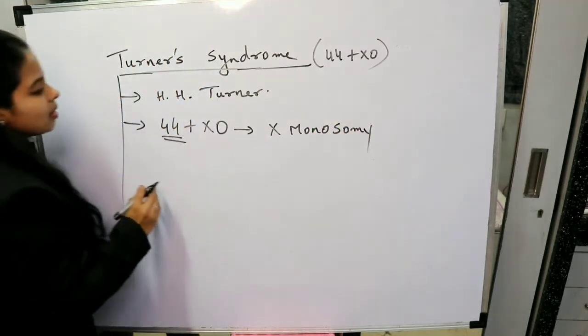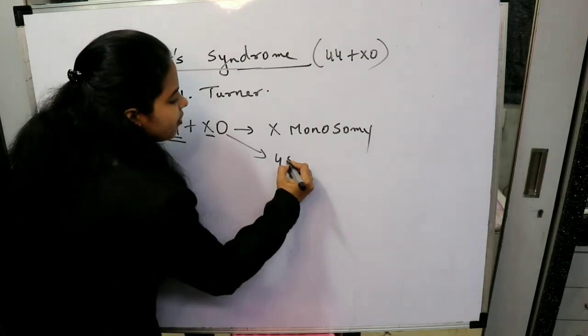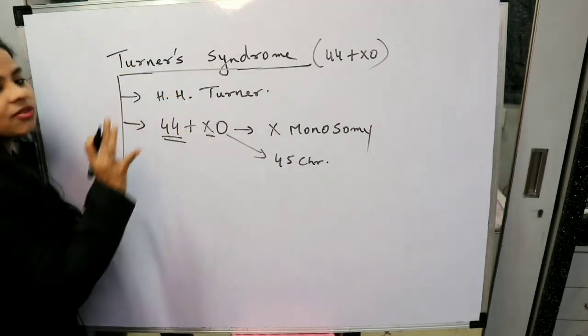And the number of chromosomes here, 44 plus 1, that is 45 chromosomes are there in this female.